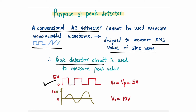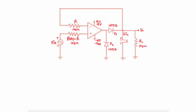That's why the peak detector circuit is used. If you give a square wave to this circuit, it will give you the peak voltage of the square wave — like here, 5 volt is the peak voltage, you will get 5 volt at output. You can also measure peak voltage of sinusoidal waveforms. The peak voltage in this waveform is 10 volt, so you will get 10 volt at output. So sinusoidal and non-sinusoidal both waveforms are supported by the peak detector.